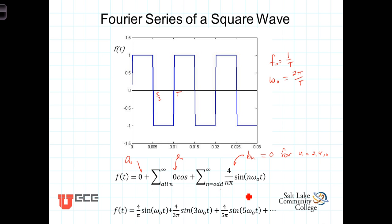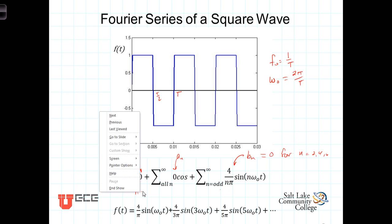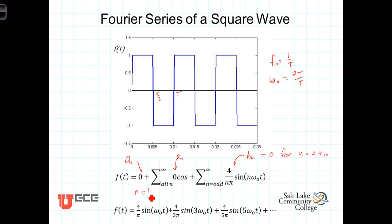Thus, this Fourier series expansion is represented with b_n equal to 4/(nπ). For n equals 1, the coefficient is 4/(1π), which is the weighting constant for the fundamental frequency. We skip n equals 2 because b2 equals 0. The n equals 3 term has coefficient b3 equals 4/(3π), times a sine wave oscillating at 3ω0. Then there's a term with coefficient 4/(5π) times sine(5ω0 t), and you continue for as many terms as desired.